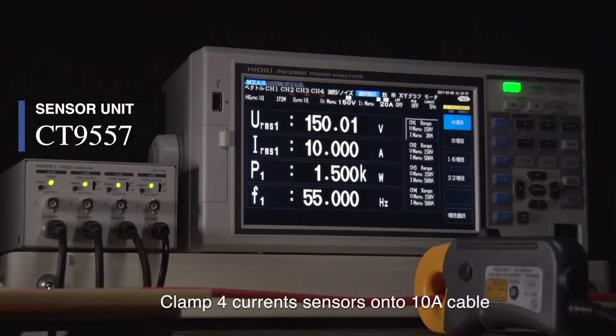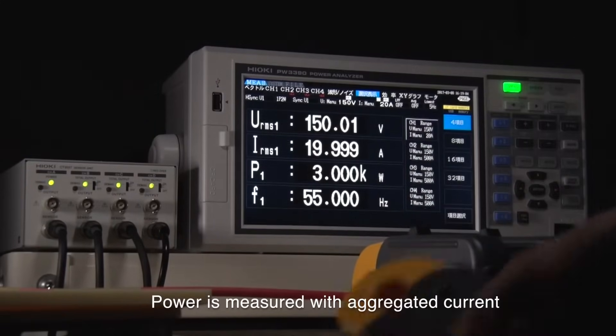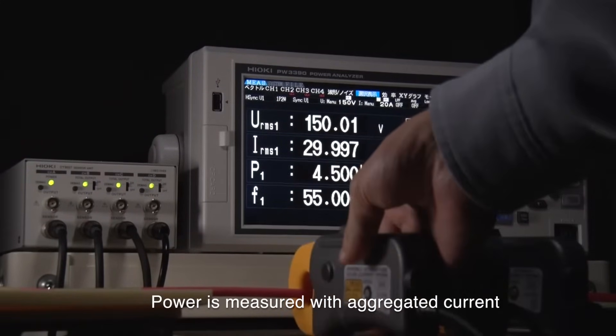To demonstrate, let's clamp four current sensors onto this 10 amp cable. As shown, power is measured with the current aggregated by the CT9557.